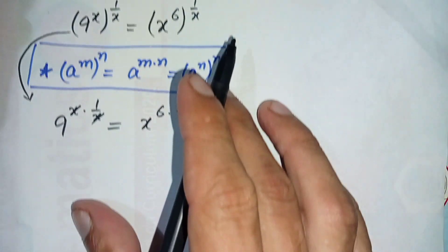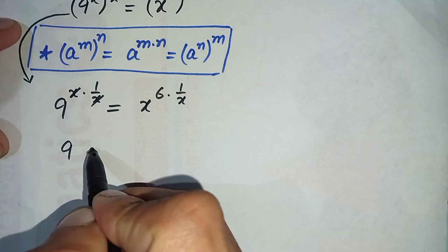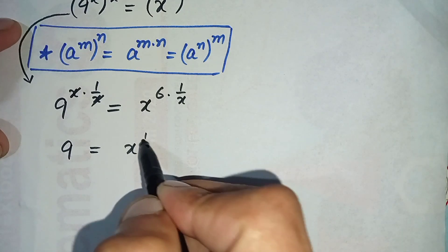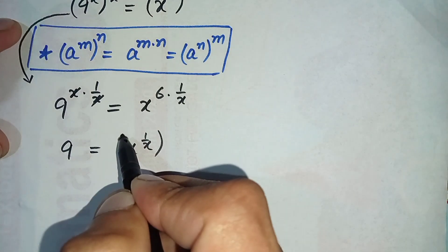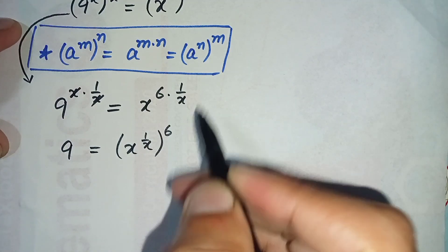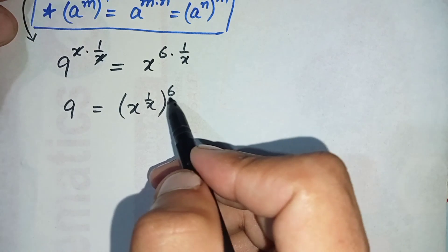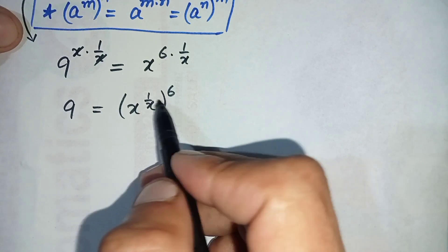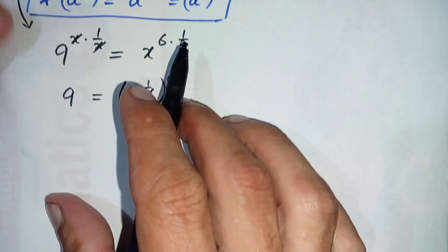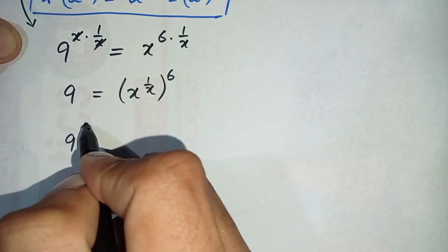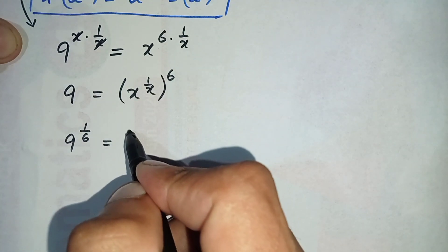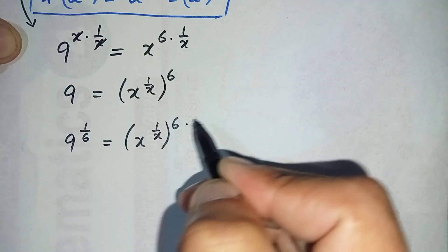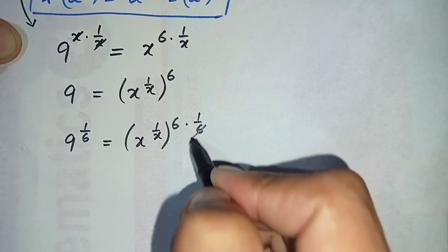On the left hand side we cancel x with x, so only 9 is left. On the right hand side we can write the powers as x raised to power 1 over x, raised to power 6. In the next step we will try to eliminate this 6 from the power on the right hand side, so we multiply 1 over 6 in the power on both sides. This gives 9 raised to power 1 over 6 is equal to x raised to power 1 over x, raised to power 6 times 1 over 6.